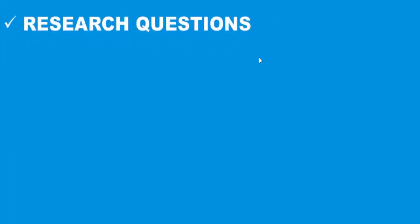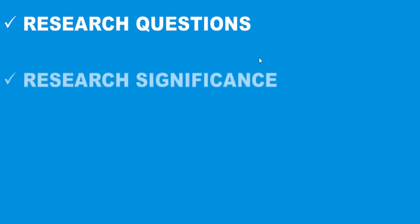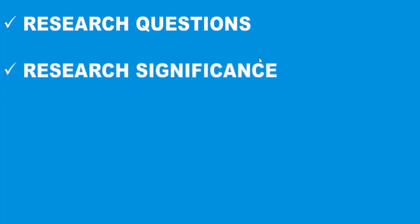Next we have research questions, where you explain your research problem in question form. After that comes research significance, or research importance. In research significance you write the importance of your study — why it is important for research academics, students, managers, organizations, and government.